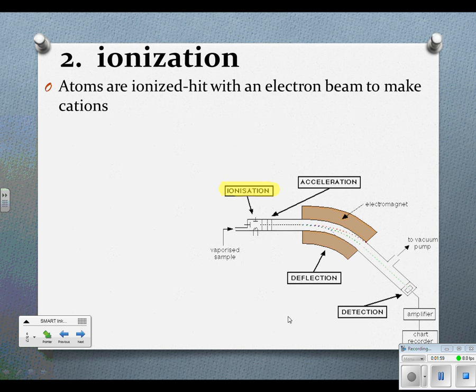Then it goes through ionization. Atoms are ionized so they're hit with an electron beam and they're turned into cations. So they're positively charged.